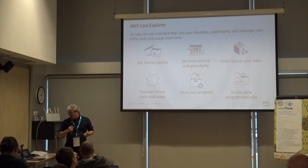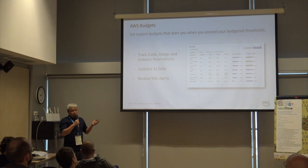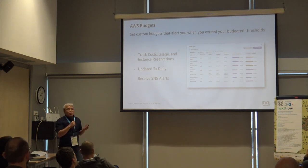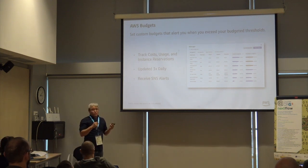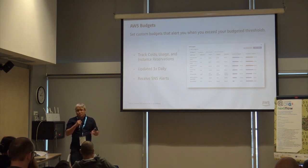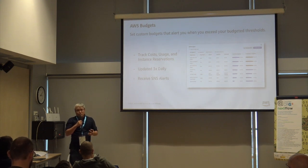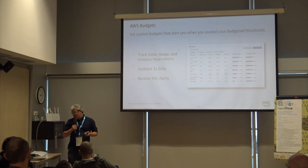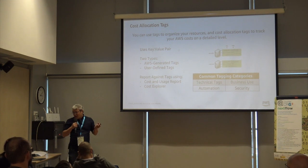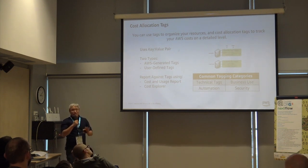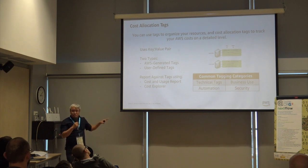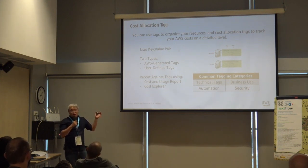One important feature is the ability to set budgets and budget alarms. Probably the first thing you want to do when you start a new account is create a budget alarm that triggers at something like $10, just to make sure nobody has hacked your account or that you're not running resources that will give you a surprise bill at the end of the month. And last but not least — everyone should do this — is tagging. A lot of the power in Cost Explorer and budgets comes from implementing cost allocation tags.